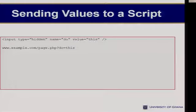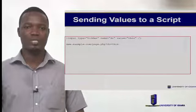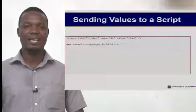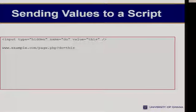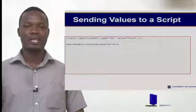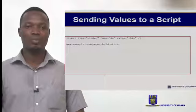To send values to a script using the hidden form, we are going to use the hidden input. The type of the input is going to be hidden. Then you pass in the name — that's the name we're going to use to access this variable when we get to the PHP script. The value is the value you also want to pass to that script. So to pass values from one script to the other, we can use the hidden input.